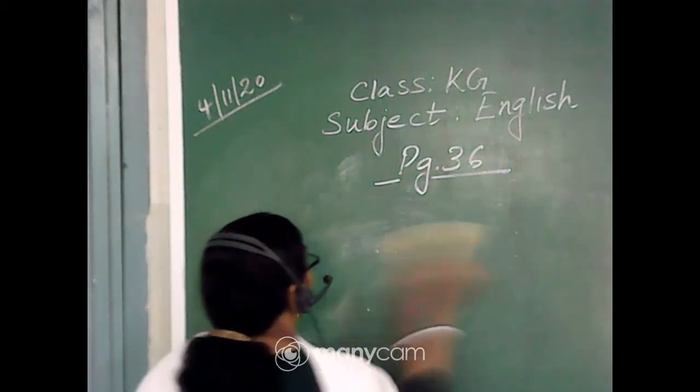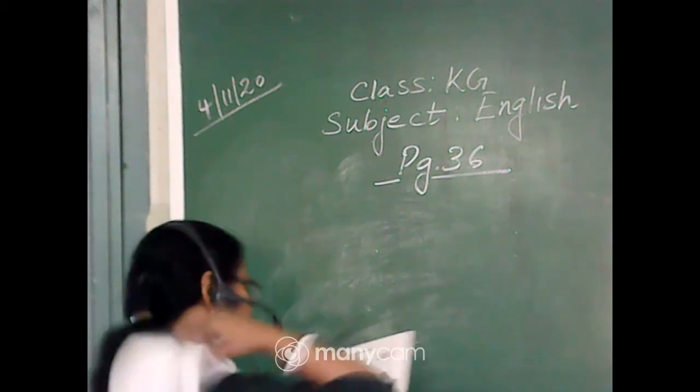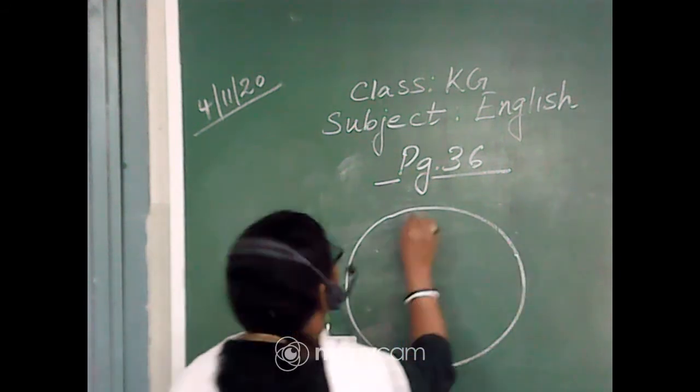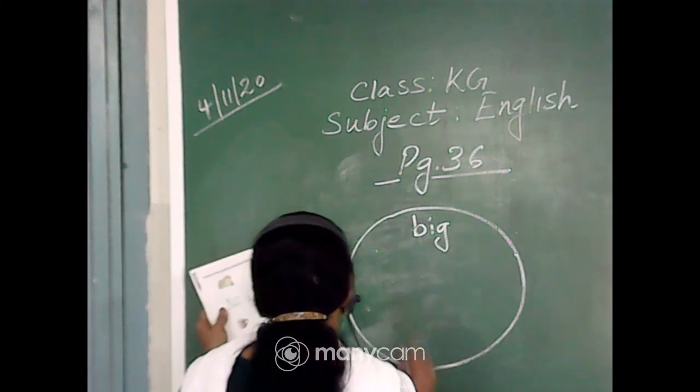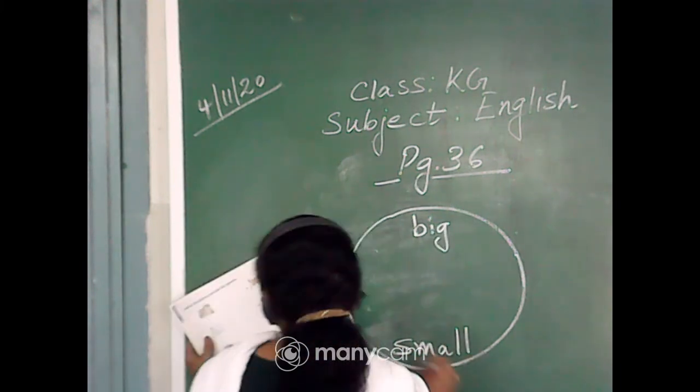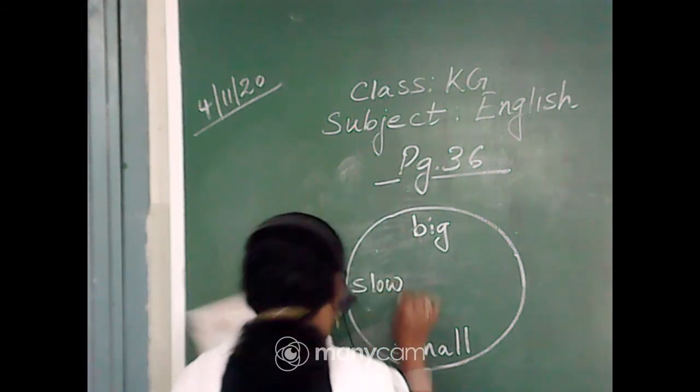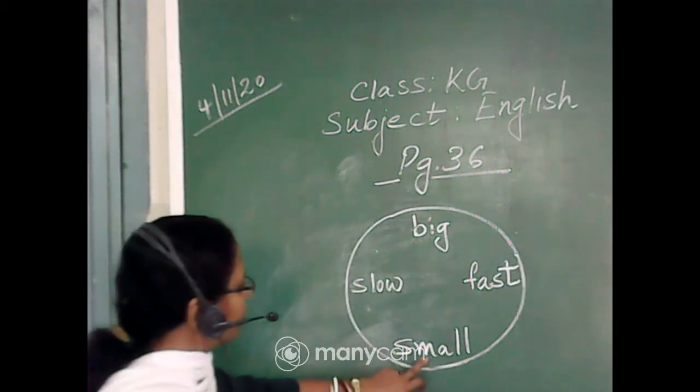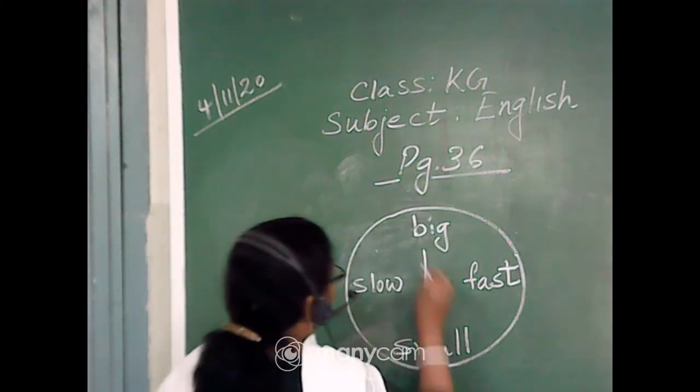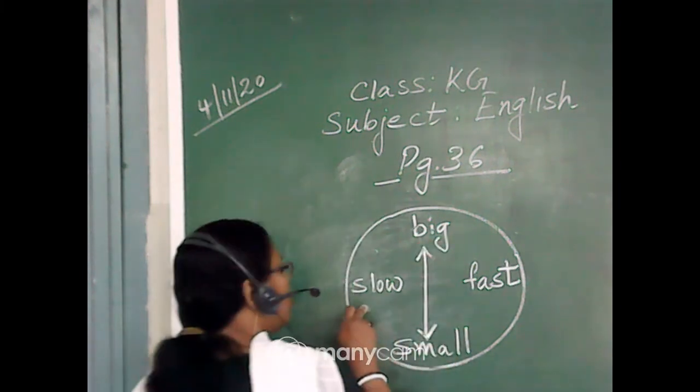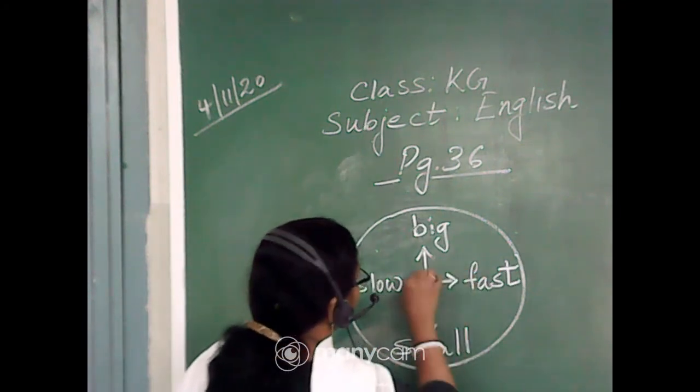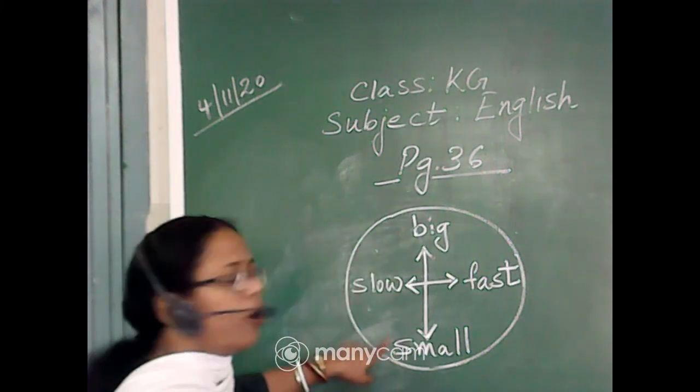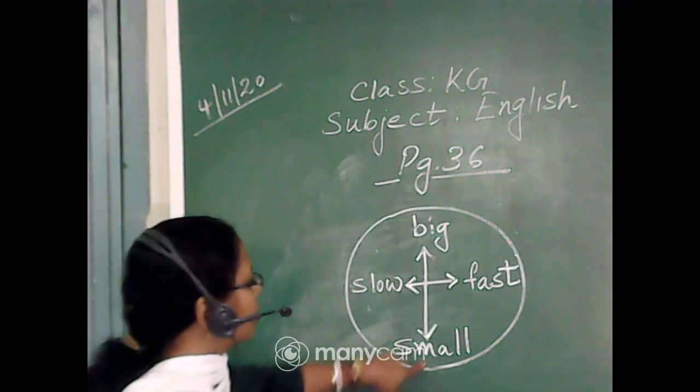And what is the next circle? Next circle is, here comes big and small. Slow and fast. Big, small. Again with a vertical line. Okay? And slow, fast. Again with a vertical line. Arrow on both the sides. So opposite of big is small. Opposite of small is big. Big, small. Small, big.